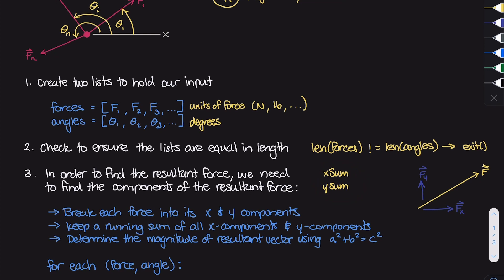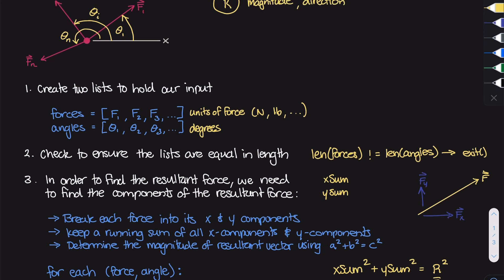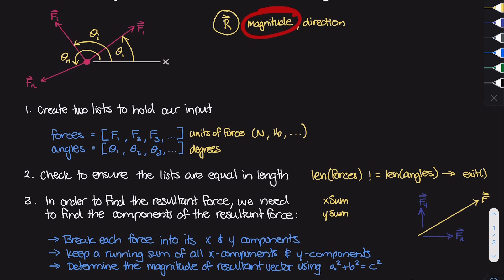Once we finish iterating through the entire list, we want to find the magnitude of the resultant vector using the Pythagorean theorem: a² + b² = c². In our case, a² is x_sum squared, b² is y_sum squared, and that equals the resultant magnitude squared. So if we take the square root of both sides, we get our resultant magnitude R. That takes care of one component of our algorithm.